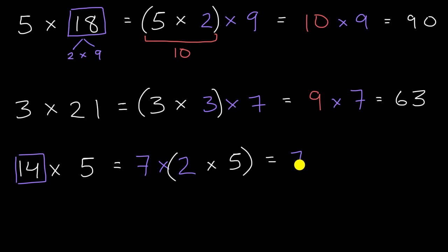And then I could multiply the 2 × 5 first. And so this is going to give us 7 × 10. 7 × 10, which is, of course, equal to 70.